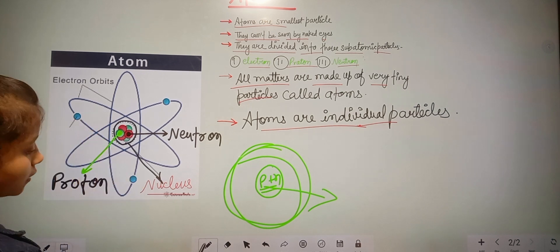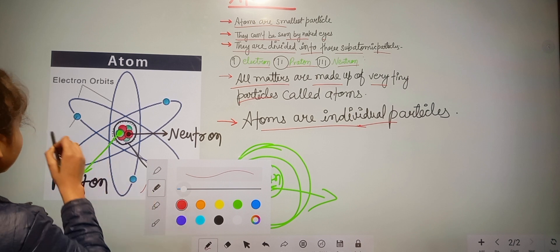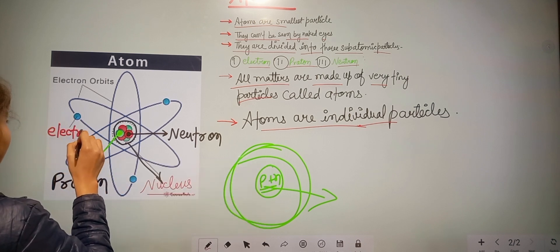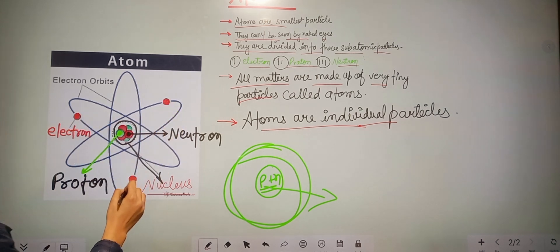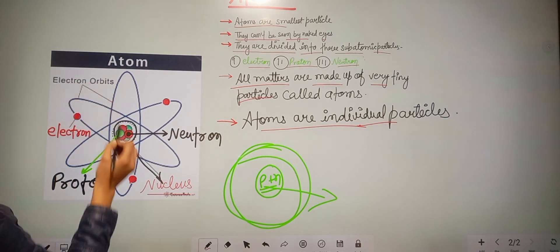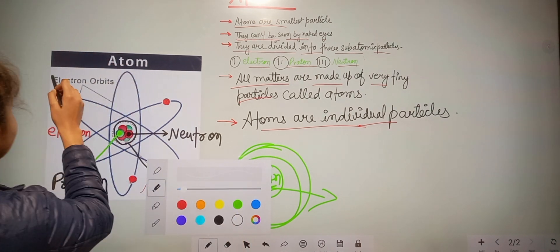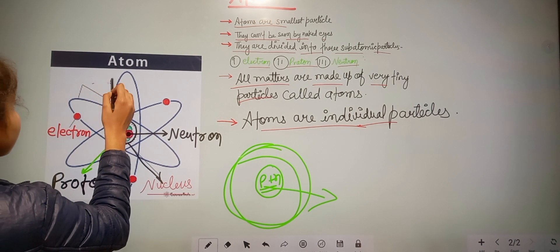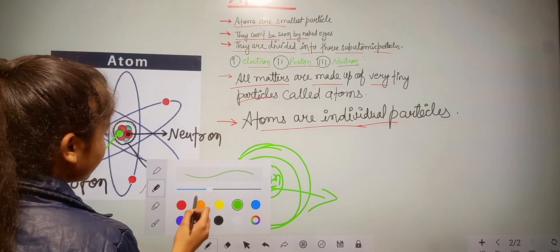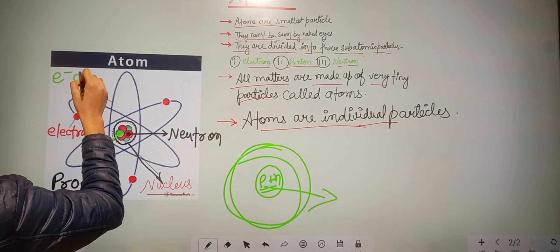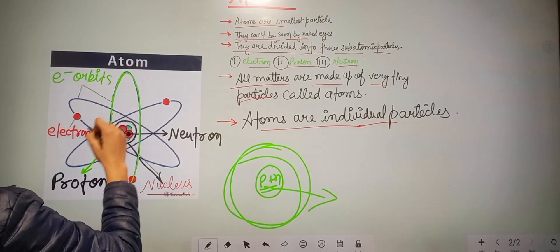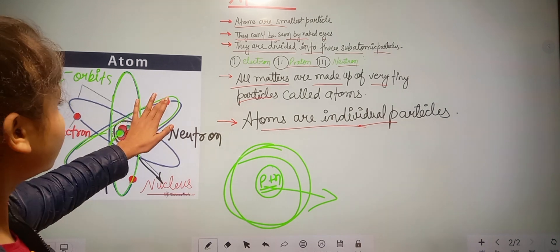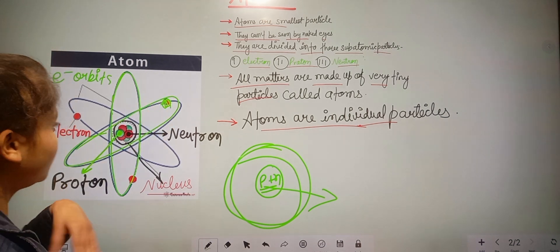This blue color particle is called electron, and this red particle is also an electron. This one is the electron orbit — the orbit on which the electron is present and moves around. Now let us discuss about molecules.